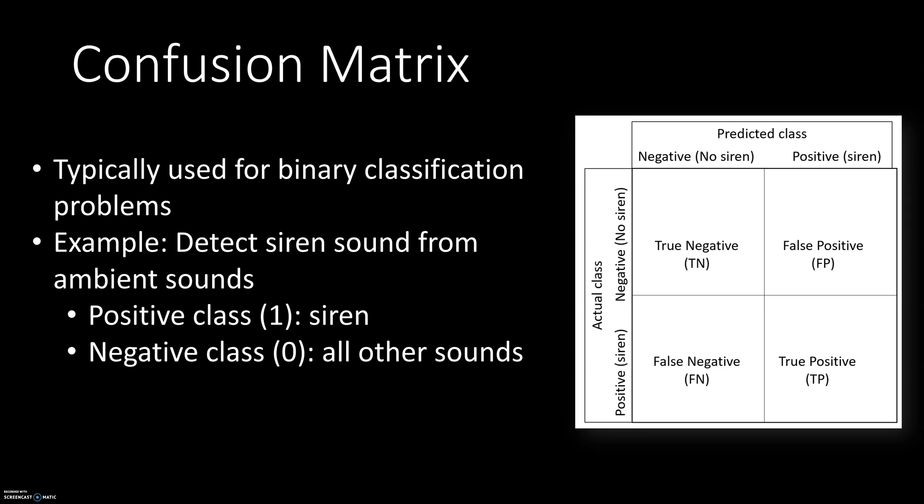The confusion matrix is typically used for a binary classification problem where we have two classes and we want the model to be able to distinguish between those two classes. As an example, let's say we have a bunch of audio files in our dataset and we want to know which audio files contain the siren sound. We divide the dataset into two classes: a positive class containing all the audio files that have the siren sound, and a negative class that contains all the audio files with sounds other than the siren. We then train the model to correctly predict these two classes.